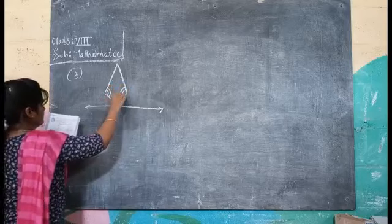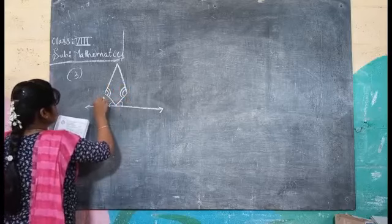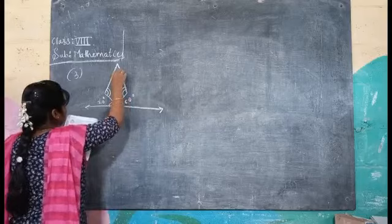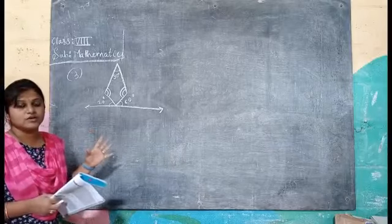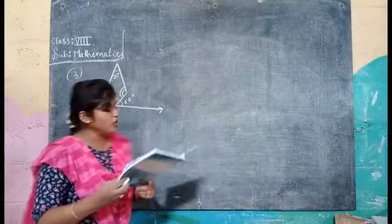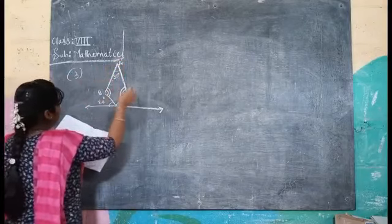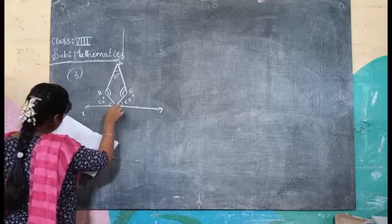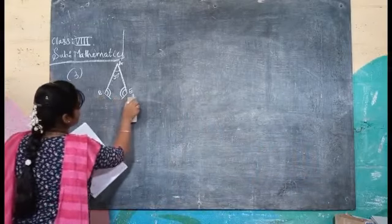We have two equal angles here. The outer angles: we have 60 degrees here, 70 degrees here, 60 degrees here, and this angle is 30 degrees. I told you in the previous class — after seeing the picture, we have to name it first. Without naming, we can't solve it. So I am giving names to this picture: this is A, this will be B, this will be E, this is X, and this is C.